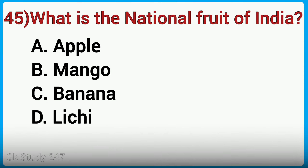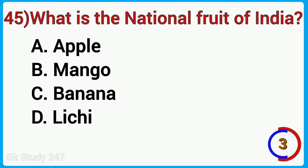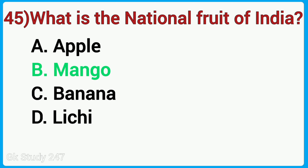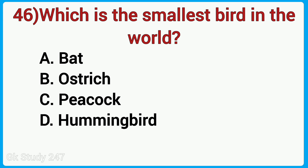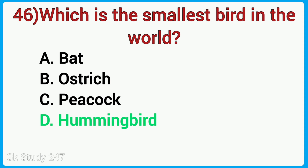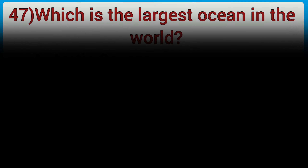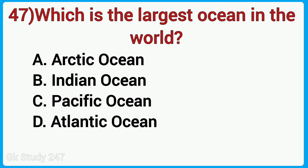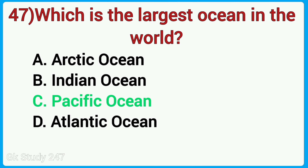What is the national fruit of India? Answer is Mango. Which is the smallest bird in the world? Answer is Hummingbird. Which is the largest ocean in the world? Answer is Pacific Ocean.